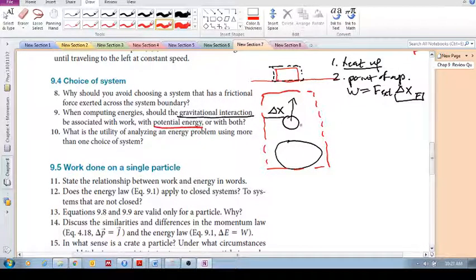Your delta U will change. It will not be zero. It'll change. If this moves up, then your change in potential energy will be positive. If this object moves down, it will be negative.